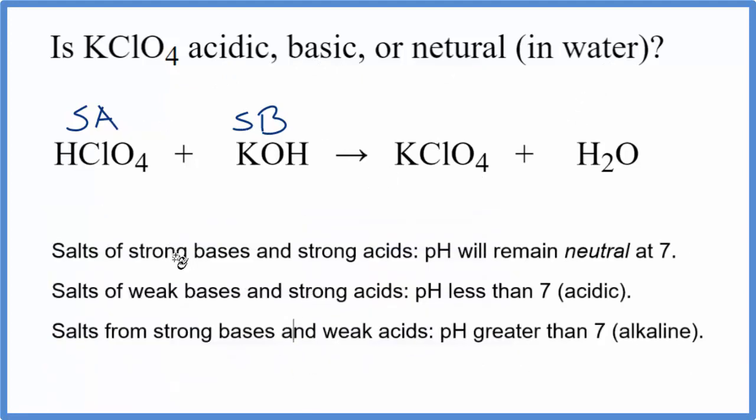So looking at our rules, if we have a strong base and a strong acid, which we do, strong base and strong acid, according to our rules when they react, when they neutralize, the salt, the KClO4 that we end up with dissolved in water, its pH will remain neutral at 7.